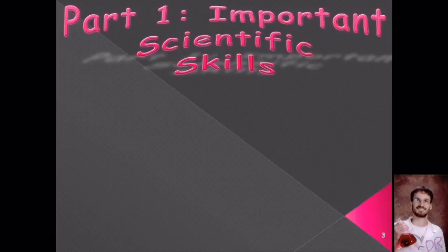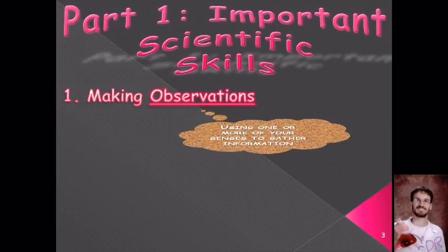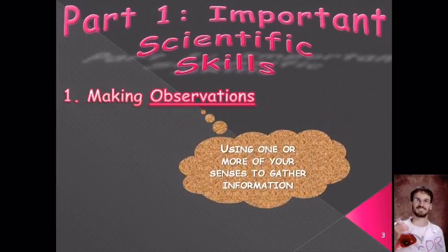We are going to discuss some important skills that all scientists have to have — if you don't have these skills, it would be very tough being a scientist. All scientists need to be able to make observations. You make observations with a lot more than just your eyes; you use all of your senses to gather information when making observations.